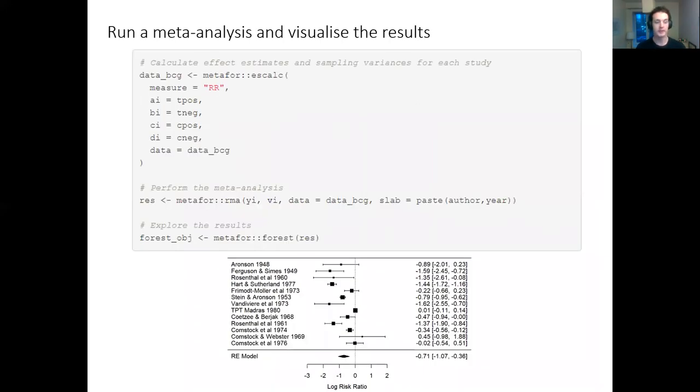To get us started - and this is drawing pretty much completely from the tutorial on metafor - we calculate the effect estimates and sampling variances for each of the 13 studies. We then pass this to metafor RMA to perform the meta-analysis. To visualize this as a forest plot, we pass this results object to metafor forest. It produces the forest plot that you see at the bottom here, showing that the BCG vaccination has some protective impact on tuberculosis.